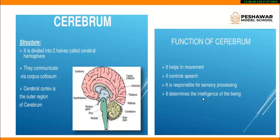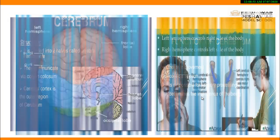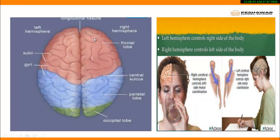The cerebrum's learning function is most active during student life. Here you can see the longitudinal fissure which has divided our cerebrum into hemispheres — the left hemisphere and the right hemisphere. An interesting fact is that the left hemisphere controls the right side of the body, while the right hemisphere controls the left side of the body. So all tasks we perform with our right hand are controlled by the left hemisphere, and vice versa.